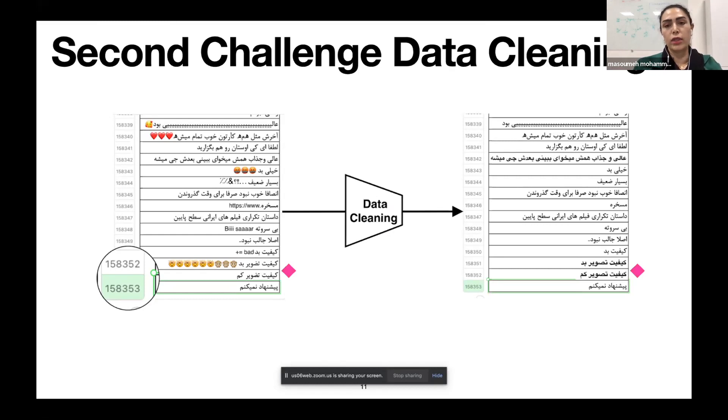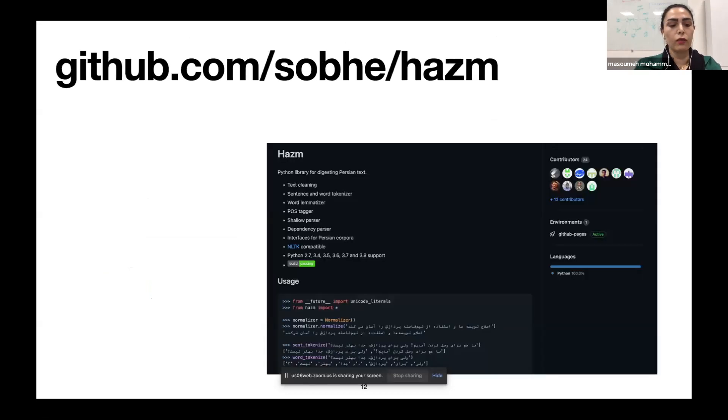The automatic phase has been handled with the Python script. This script contains removing punctuation and emojis. After that, we try to normalize the data. We use HasNormalizer, a Python library for digesting Persian text, text cleaning, sentence and word tokenizer, word lemmatizer, etc. Here in this slide, you can find the GitHub links of HasNormalizer.